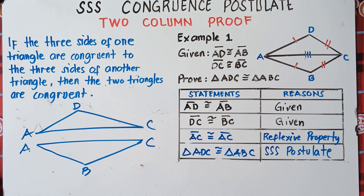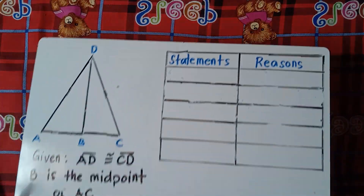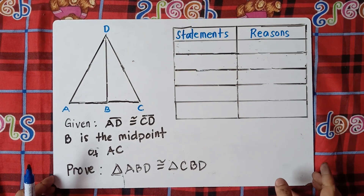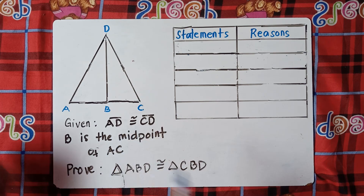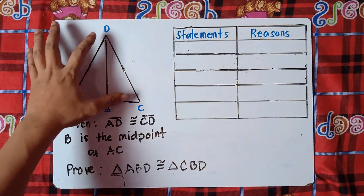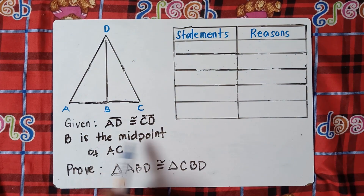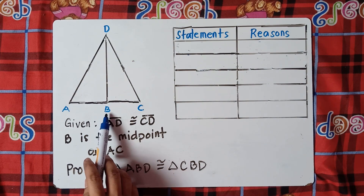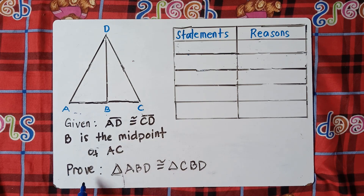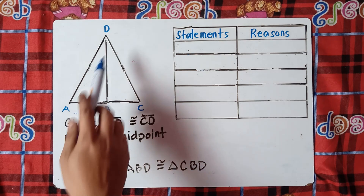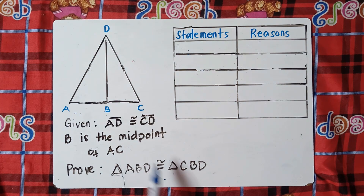Very easy, right? Let's try one last example to understand this better. Given: AD is congruent to CD, and B is the midpoint of AC. We need to prove that triangle ABD is congruent to triangle CBD.